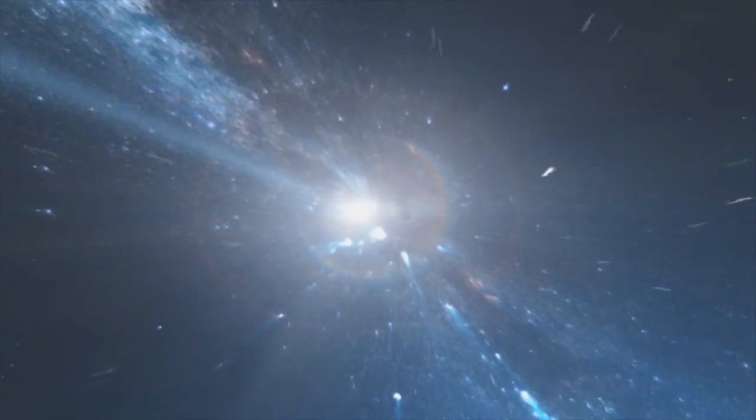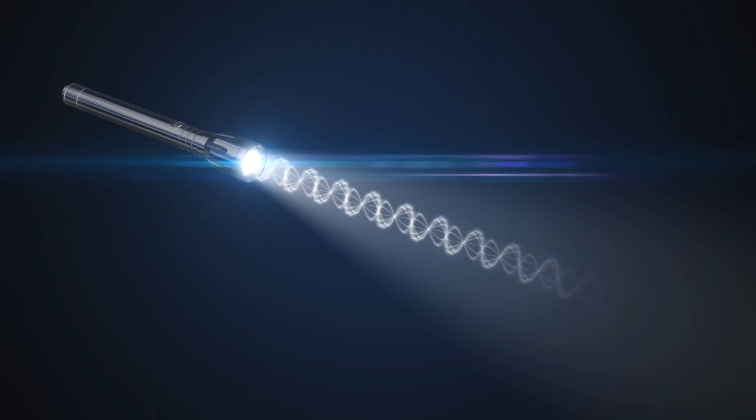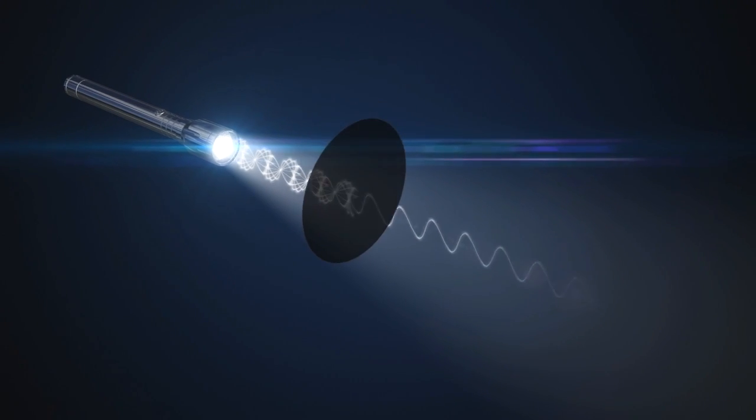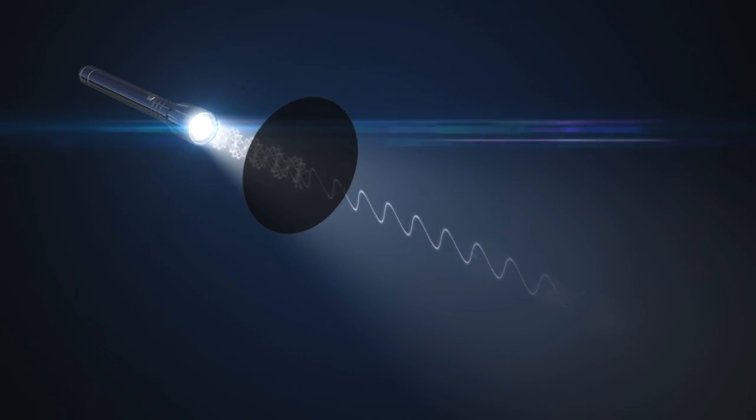Light is an electromagnetic wave. Usually, the plane containing a light wave can be in any direction, but sometimes one direction is more likely than others, and the light is said to be polarized.